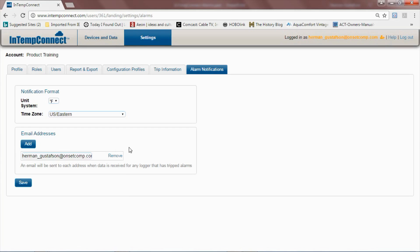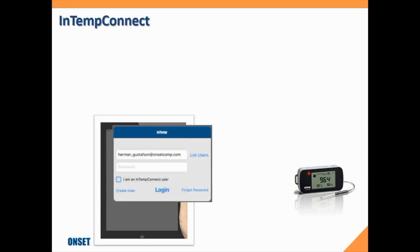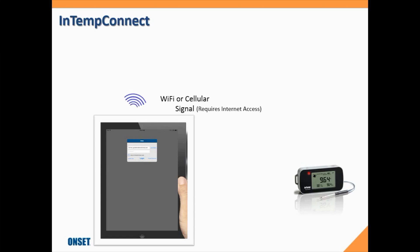Once we have this configured, we click Save. As we discussed in previous videos, we want to communicate with our data logger using our In-Temp app on our smartphone or tablet. We make sure to select 'I am an In-Temp Connect user,' enter our username and password, communicate with the data logger, and it transmits its data to our smartphone or tablet.